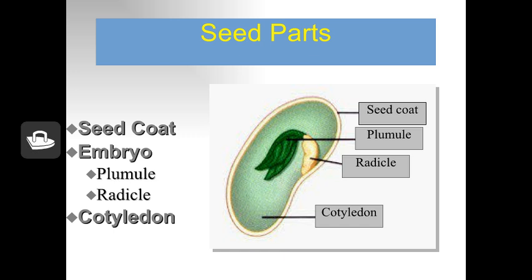The endosperm, also called a cotyledon, is a built-in food supply made up of proteins, carbohydrates, and fats that will feed the young embryo. The seed coat — the harder outer coating — protects the seed from disease and insects. It also prevents water from entering the seed and initiating germination before the proper time.